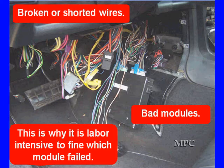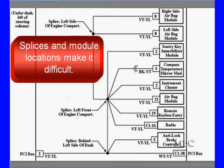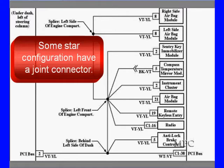Sometimes, particularly after an accident, you will find shorted wires. That's why it's labor-intensive. Plan on charging by the hour. Splices in module locations make it difficult to go isolate every one of these modules. But you're going to have to do it. We can't give you a shortcut. There's no easy way to fix this. Some star configurations do have something that's very important. It's called a joint connector. It's where all of them come to a central point.